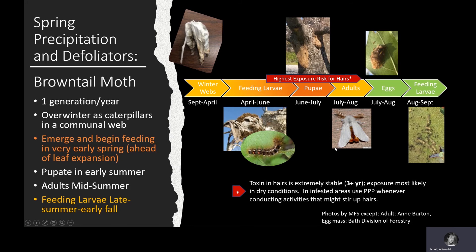The eggs will hatch in early August, and then the caterpillars will feed communally on the leaf where the eggs were deposited, as well as other leaves on that same branch. As they feed, they lay down silken strands that tie the winter web to the host, and they produce a large amount of silk creating a protected location. That same silk becomes incorporated into the overwintering web — just after they hatch, they really start to build their home for the winter.